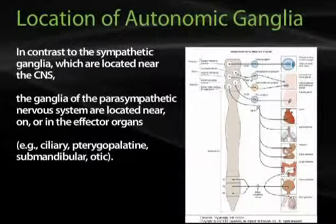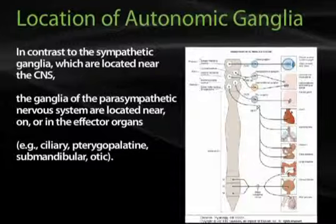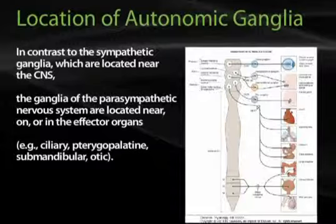In contrast to the sympathetic ganglia, which are located near the CNS, the ganglia of the parasympathetic nervous system are located near, on, or in the effector organ. For example, the ciliary, pterygopalatine, submandibular, and otic ganglia are very near to their target organs.